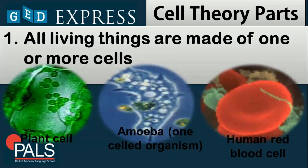We will now proceed with the cell theory and its parts. The first statement is: all living things are made up of one or more cells. We can categorize living things as unicellular — meaning they only have one cell, such as the amoeba — and we can also categorize them as multicellular, meaning there are a union of cells working together, like cells of plants and human beings, such as the human red blood cell.